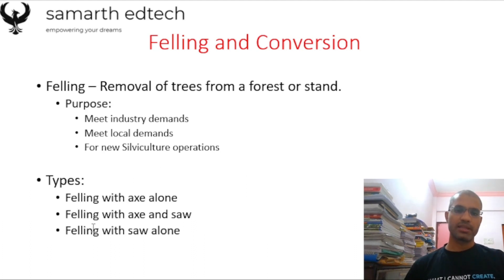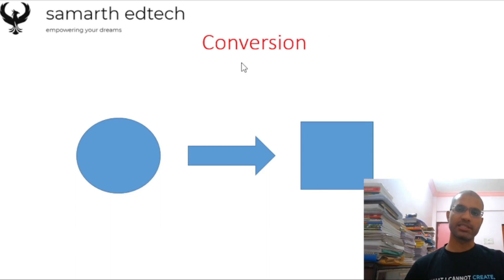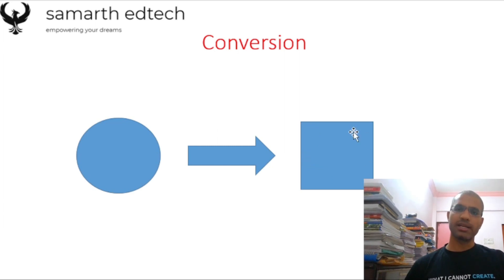Felling with axe alone uses only an axe to cut the trees; felling with axe and saw uses both; felling with saw alone uses only a saw. Conversion refers to converting timber from its circular shape to a square shape — that is the only definition of this particular concept.